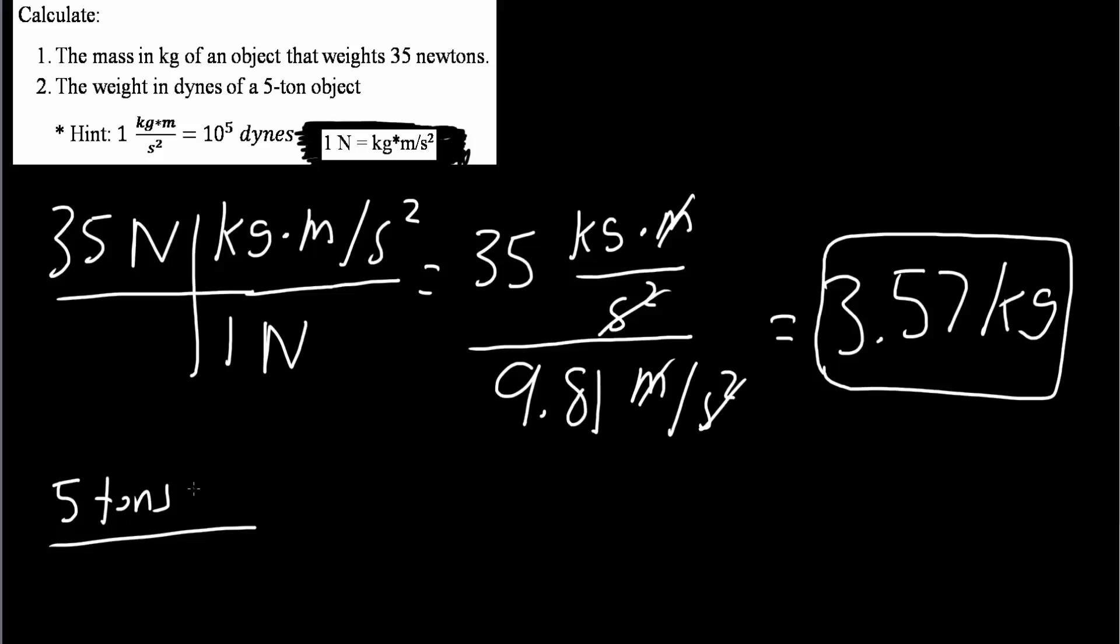We know that 1 ton is about 2,000 pounds. And we know that 2.2 pounds is roughly 1 kilogram. This is another conversion that we should have memorized. And when we do this, tons cancel, pounds cancel, and we just have kilograms.